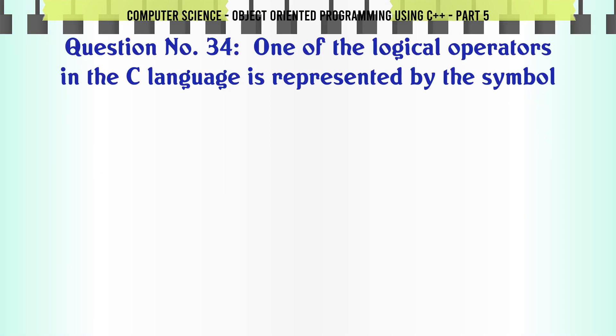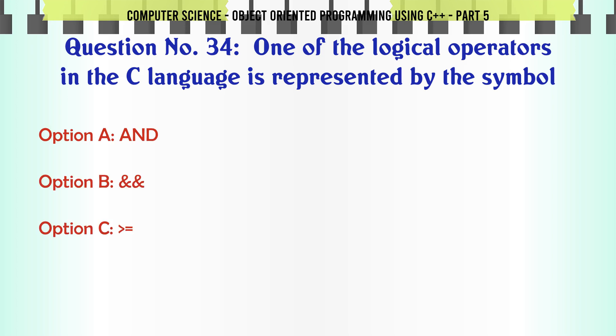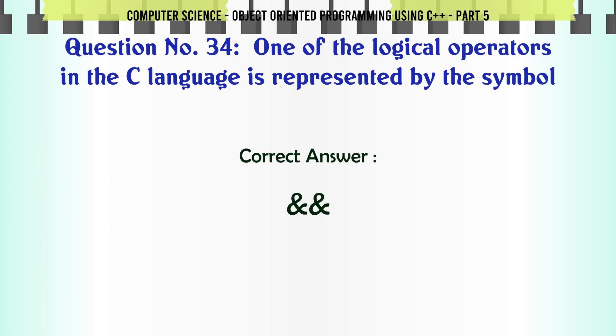One of the logical operators in the C++ language is represented by the symbol. A. AND. B. C. D. The correct answer is one of the standard logical operator symbols (&&, ||, !).